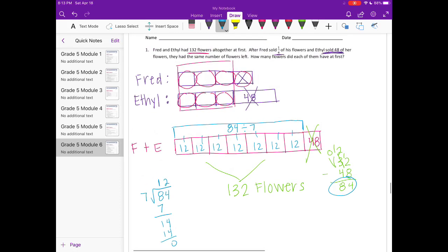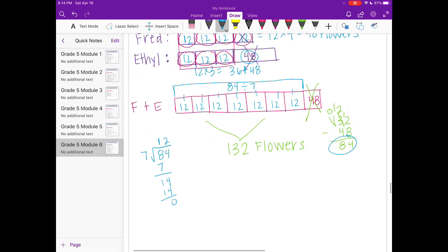Seven goes into 14 two times, no remainder. So each of these is equal to 12. Now we can go back up top to Fred's. We know at the beginning each of these pieces is 12, which would be equal to 12 times 4. So at the beginning Fred had 48 flowers, and Ethel had 12 times 3, or 36 flowers, plus 48. Let's figure out what 36 plus 48 is.